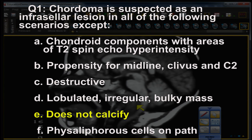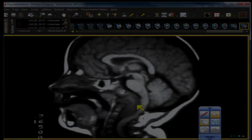So E is the correct false choice — it's the exception. Choices A, B, C, D, and F are all true. F — physaliferous cells on pathology — is a distractor you don't necessarily need to know. The key teaching point: chordoma IS calcified, and if you don't know that, you might be in trouble.